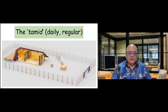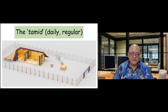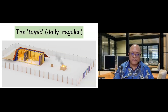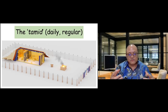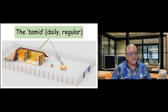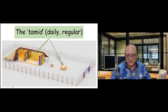The first focal point is what we call the tamid — a word that can mean daily, regular, or things that happen every single day of the week. There are three things that happen every day: the sacrifices at the altar, the menorah or candlestick, and the incense.